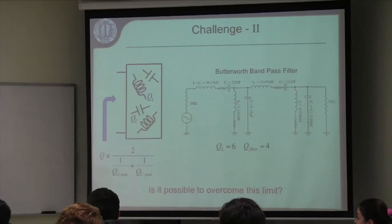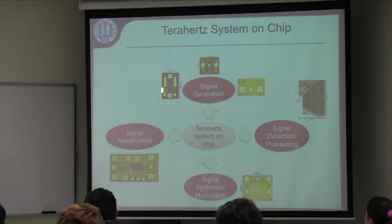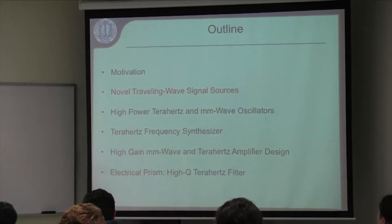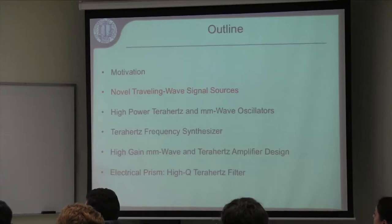The question is: can we overcome this limit using passive networks, and if so, how? These are the blocks I'll cover: signal generation and detection, filters, synthesis — multipliers and PLLs — and amplification at terahertz and millimeter wave frequencies.